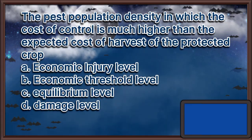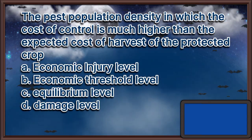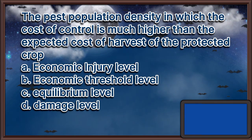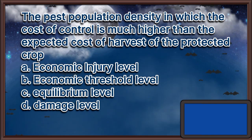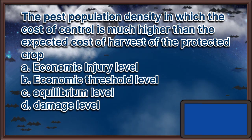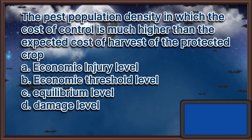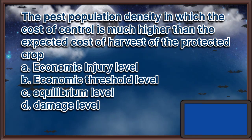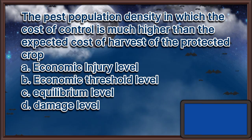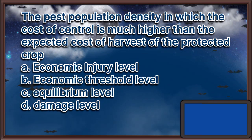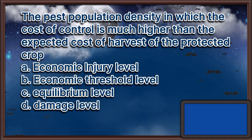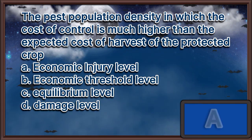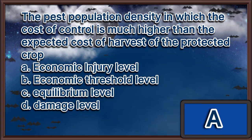The pest population density in which the cost of control is much higher than the expected cost of harvest of the protected crop: A. Economic injury level, B. Economic threshold level, C. Equilibrium level, D. Damage level. The answer is letter A.